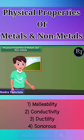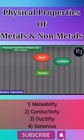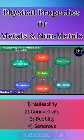So friends, by these properties we can say that metals are hard, lustrous, malleable, ductile, sonorous and good conductors of heat and electricity.